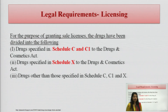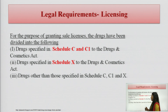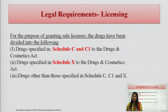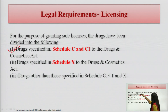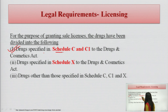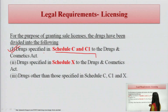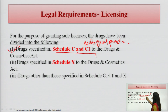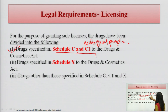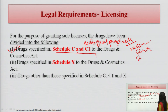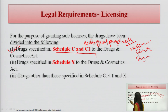For the licensing criteria — if anyone wants to open a retail or wholesale drug store, they should have a license as per the schedule of the drugs they are working with. For granting sale licenses, there are three conditions. Drugs specified in Schedule C and C1 are biological products such as vaccines, sera, and immunologicals, as per the Drugs and Cosmetics Act, 1940. Every record should be maintained if working with Schedule C and C1.